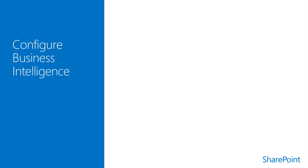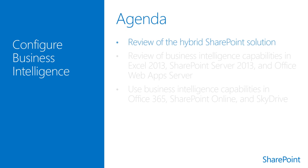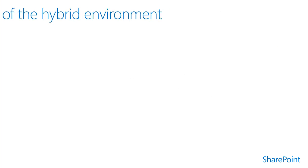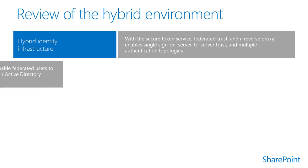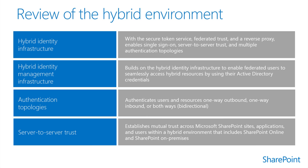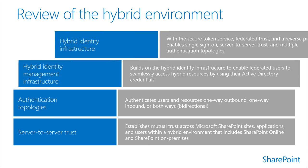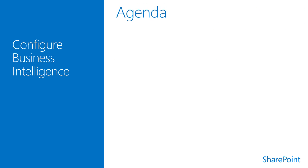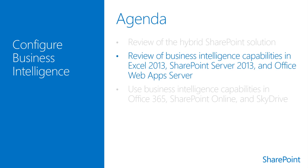This section in Module 3.2 provides an overview of the hybrid SharePoint environment. Modules 2.1 through 2.4 provided an overview of the core elements necessary to implement a hybrid SharePoint environment, to include the identity infrastructure, identity management, authentication topologies, and server-to-server trust. This section in Module 3.2 also provides an overview of business intelligence capabilities in Excel 2013, SharePoint 2013, and Office Web App Server.